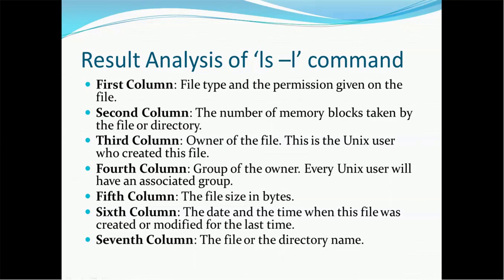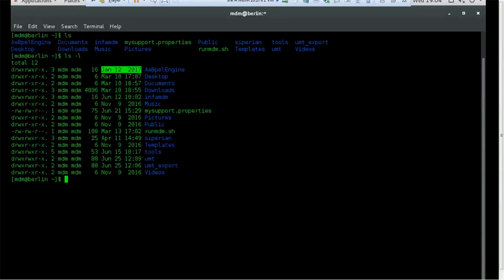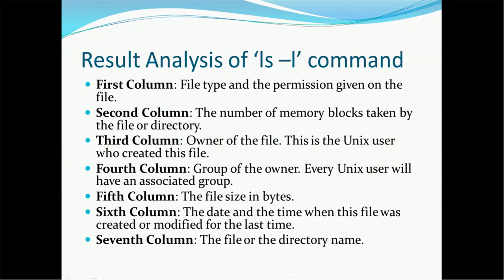The first column gives the information about the file type and the permissions given on that file. So out of this first, this is the first column. Out of the first column, first character denotes whether it is a directory or file. D stands for directory, hyphen stands for file.